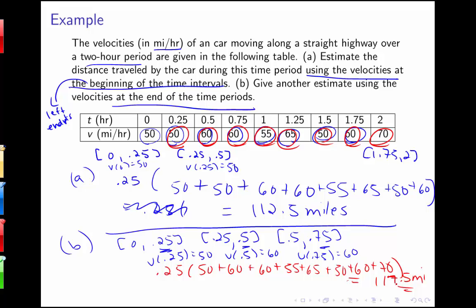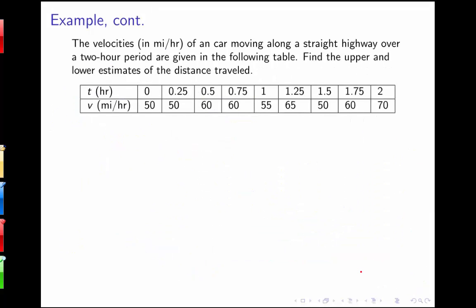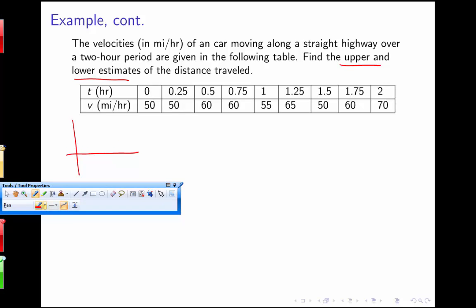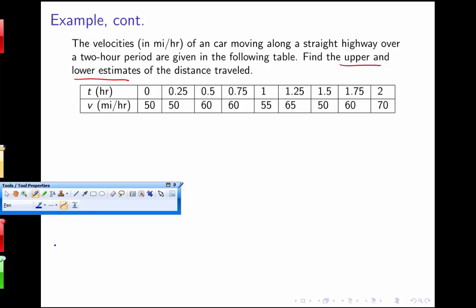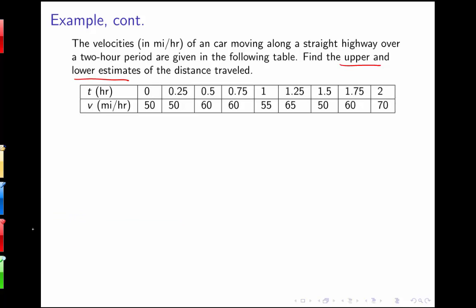One question that we'll ask ourselves is, is either one of these two estimates the biggest or the smallest estimate given this information? We want to talk about what it means to have an upper sum or an upper estimate and a lower estimate. When we talk about upper and lower estimates, we mean that the upper one will choose the endpoint in each interval that gives us the maximum value we could have over that interval. If we want the lower estimate or the lower sum, we'll choose the endpoint over the interval that gives us the smaller value.